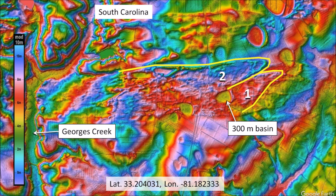A basin measuring 300 meters was emplaced on the first sand sheet and then partially covered when the second sand sheet was deposited. The source of the water and sand for the sand sheets probably came from the adjacent Georges Creek. It also appears that two Carolina Bays tried to form while the second sand sheet was forming, but they ended up being distorted in the direction that the sand sheet was moving.